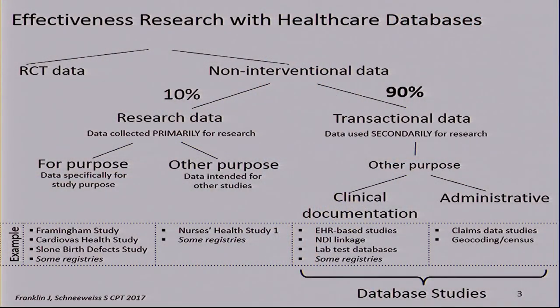When we think about data for effectiveness research in healthcare, we have the world of randomized trials on one side, and the non-interventional studies on the other. Within the non-interventional studies we have two major different sources of data: primary data, generated for conducting research on these subjects, versus transactional data, which are secondarily used for research — data generated for other purposes. Some of these data are generated for clinical documentation, when a provider is sitting across from a patient and looking at the computer screen.